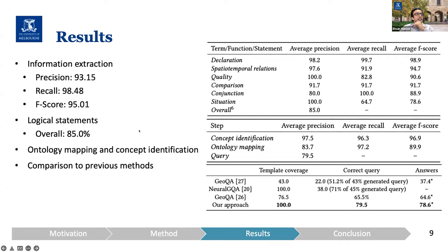The ontology mapping and concept identification results are shown here. Concept identification is much easier because it's simply based on labels and names. But ontology mapping is a bit more tricky, which is why we have lower average precision but higher recall. Overall, I think the BERT embeddings are performing really well because the ontology mapping task is quite challenging.